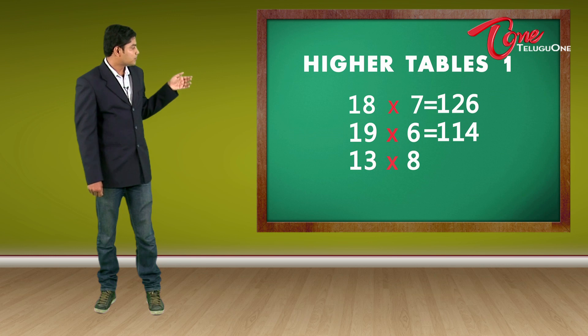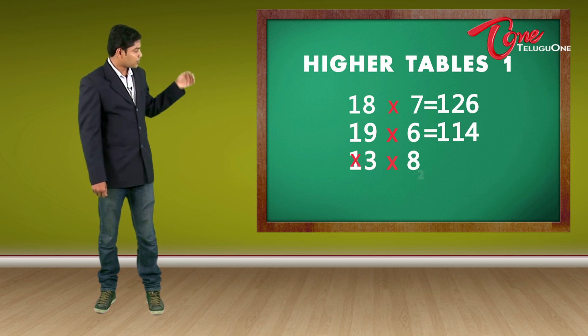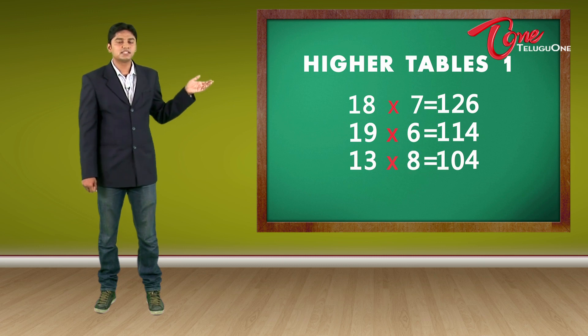13 times 8. So 3 times 8 is 24. 2 and 4. 8 plus 2 is 10. So my answer is 104.